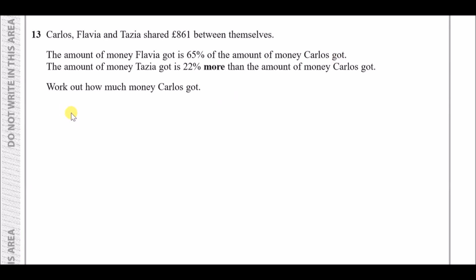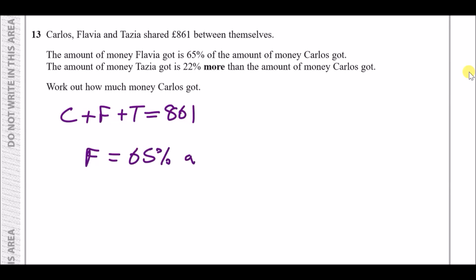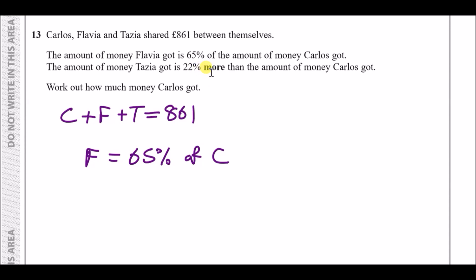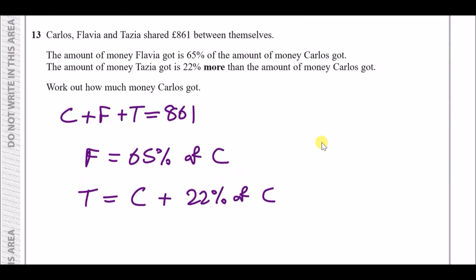Number 13: Carlos, Flavia, and Tazia share 861 pounds. So c + f + t = 861. Flavia received 65% of Carlos's amount: f = 0.65c. Tazia got 22% more than Carlos, meaning she received Carlos's amount plus an additional 22% of his amount: t = 1.22c.